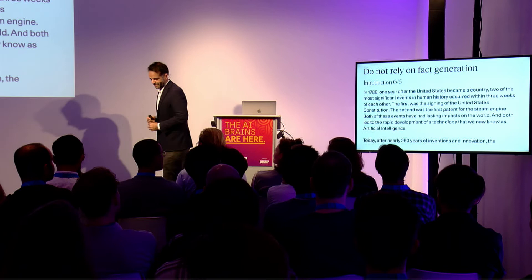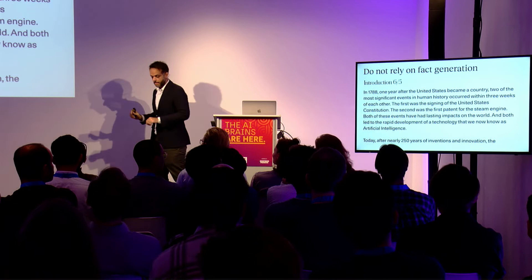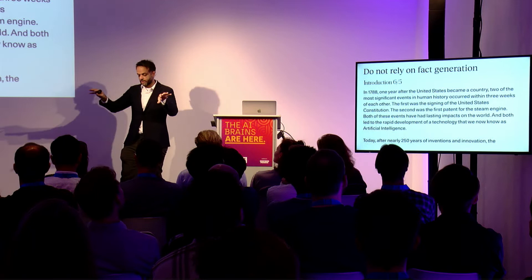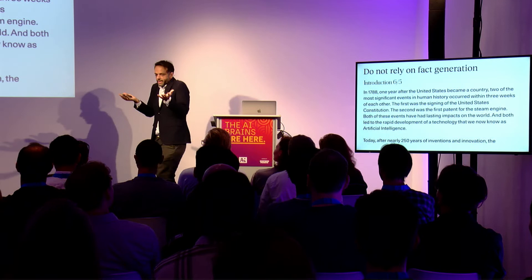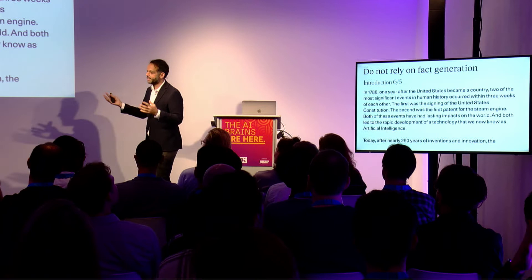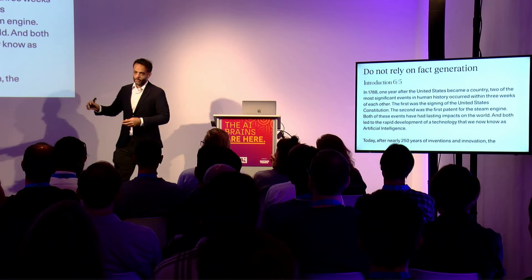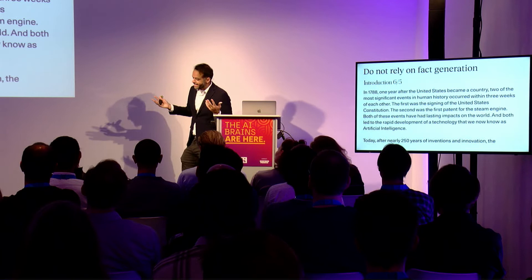This one didn't make the cut, but it's my favorite introduction. 'In 1788, one year after the United States became a country, two of the most significant events in human history occurred within three weeks of each other. The first was the signing of the United States Constitution. The second was the first patent for the steam engine. Both events have had lasting impacts and both led to rapid development of a technology we now know as artificial intelligence.' I was absolutely hooked — I have never written a hook nearly as good as this. But this is a good example of why we need to be suspicious about the factuality of what the model generates.